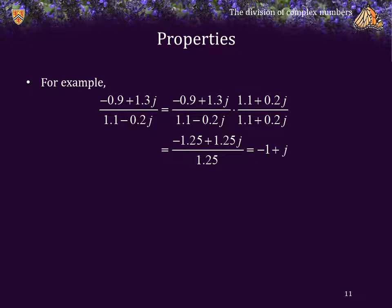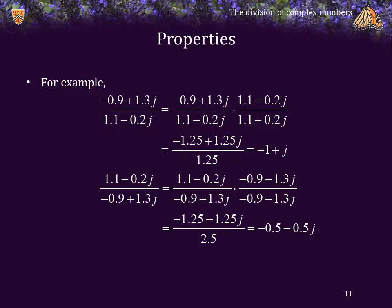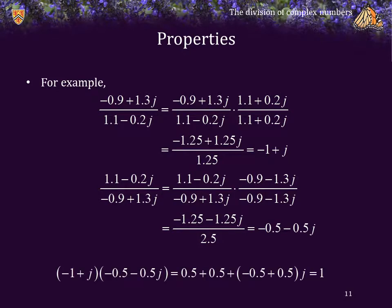For example, here we have the ratio of two complex numbers: negative 0.9 plus 1.3j over 1.1 minus 0.2j. Using the complex conjugate, the magnitude squared of the denominator is 1.25, and the product of the numerator gives negative 1.25 plus 1.25j, which simplifies to negative 1 plus j. The reciprocal — 1.1 minus 0.2j over negative 0.9 plus 1.3j — works out to negative 0.5 minus 0.5j. Multiplying negative 1 plus j by negative 0.5 minus 0.5j gives 1, confirming the second is the multiplicative inverse of the first.